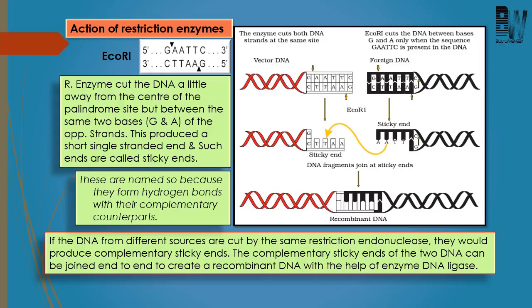To produce recombinant DNA, the foreign donor DNA and the vector DNA must be cut by the same restriction enzyme. If the two DNAs are cut by the same restriction enzyme, then the sticky ends they produce will be complementary to each other. If they are complementary to each other, they can be easily joined together by another enzyme, that is DNA ligase.